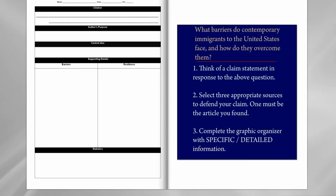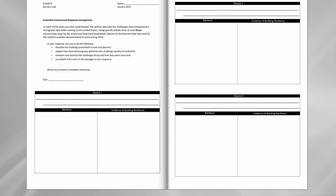The next part of the project will involve some writing. You're going to be writing an extended constructed response using that same research question presented earlier. We're going to go over some of these steps in more detail in the next lesson. But if you do finish with your article, note that you're going to be using your article as one of your sources, and you'll need to have three sources total.